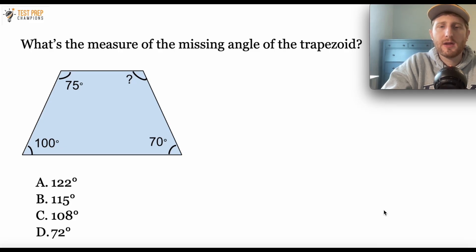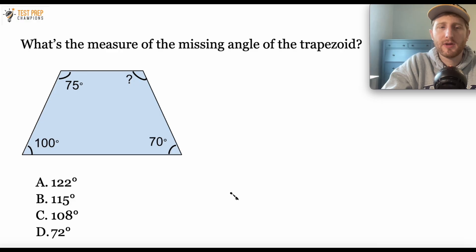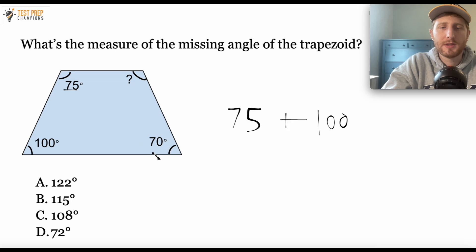The idea here is that for a four-sided plane figure, all of the internal angles will add up to 360 degrees. So what we have to do is set up an equation and set it equal to 360. I'm going to say 75 plus 100 plus 70 plus x equals 360.